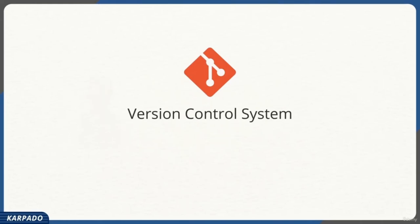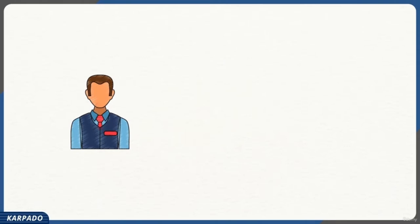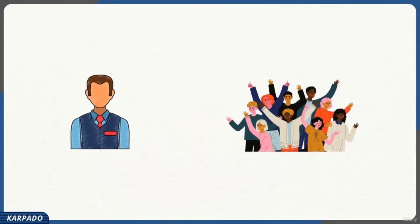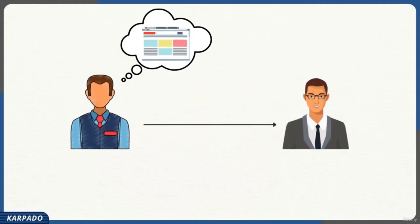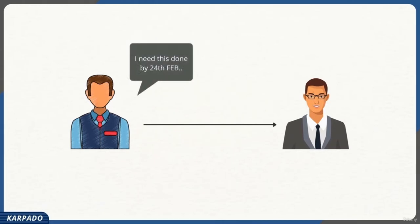Why do we need a version control system? Meet Bob, who is an investment advisor. Due to his amazing work, his client base has increased significantly over time, and so he sees a need to have his own personal website. Bob, being a non-technical guy, thought of taking help from a freelancer. He met Sundar, explained everything he expected, and gave a deadline of 24th February — his birthday — which Sundar agreed to.